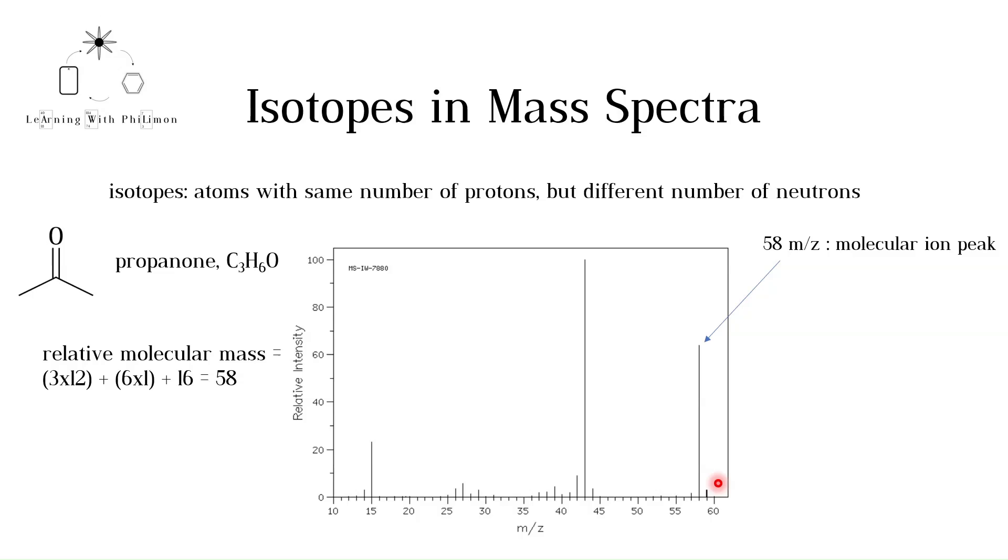The reason we see a peak at 59 is because propanone contains carbon atoms. In our whole sample, some of the carbon atoms will be C13 rather than C12. If a propanone molecule contains one carbon-13 isotope, then its relative molecular mass is 1 greater, 59 not 58. Because carbon-13 is not abundant, there is a very low percentage of propanone molecules that are heavier, hence the very small peak.